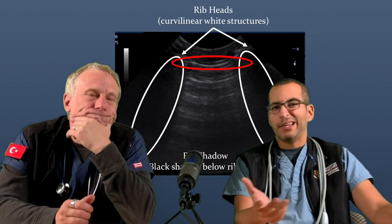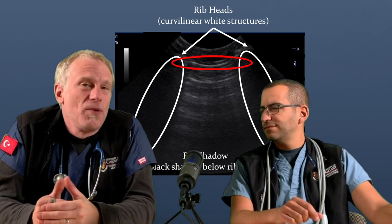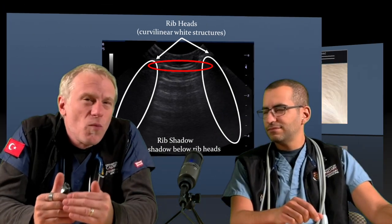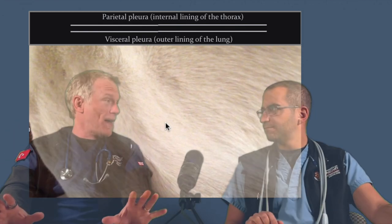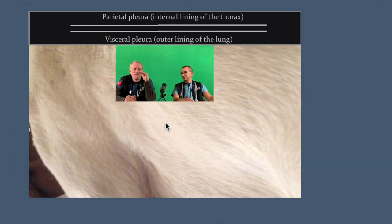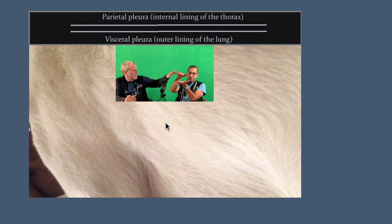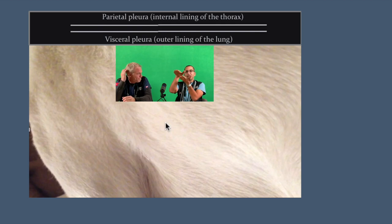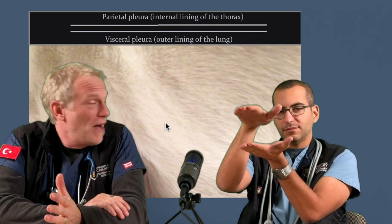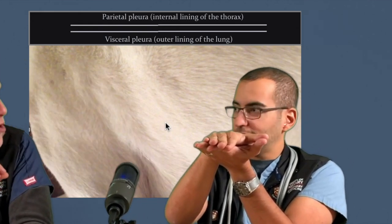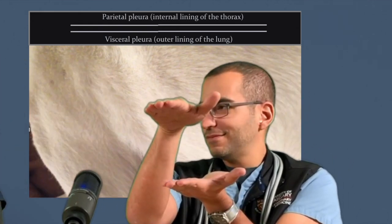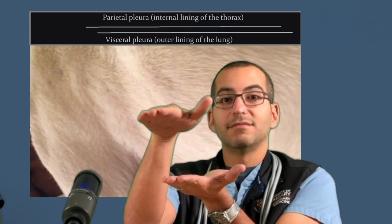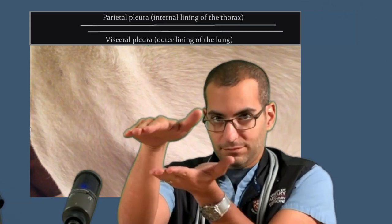So this bright white line — what does it really mean? This is the thing most people struggle with. Let's break this down in a schematic. Imagine you can separate the inside lining of the thorax — the parietal pleura — from the outside lining of the lung — the visceral pleura. In reality we don't see a gap there, but for the sake of this argument let's pretend you can. When a patient breathes, it is normal for the parietal and visceral pleura to move, and fortunately they move at a different rate.